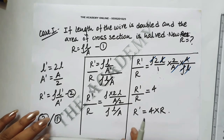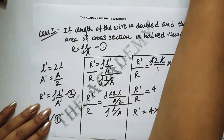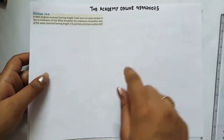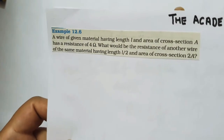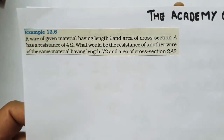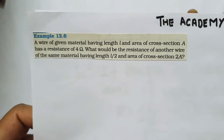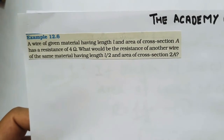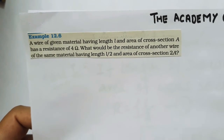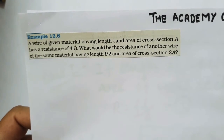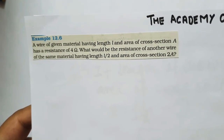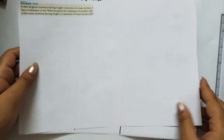Now let's come to example 12.6. A wire of given material having length L and area of cross section A has a resistance of 4 ohms. What would be the resistance of another wire of the same material having length L by 2 and area of cross section 2A? Pause and try to solve it yourself.